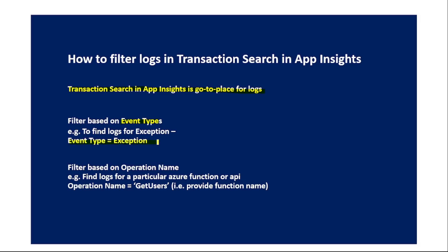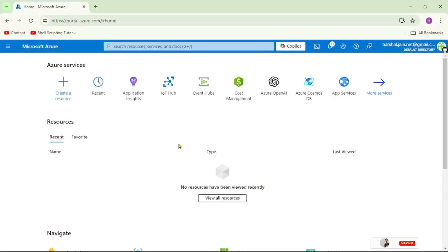We can select event type equal to exception. Second, we will discuss filters based on operation name — for example, if we want to find logs for a particular Azure function or a particular API, we can select operation name equal to 'get users'. 'Get users' is just an example of a function. Now let's see this in the Azure portal.